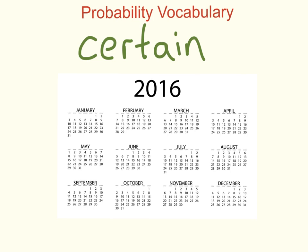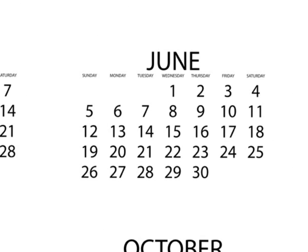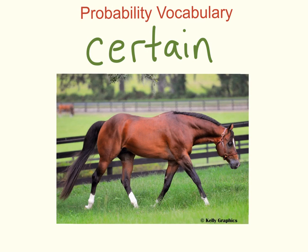July is certain to come after June. We could also say that Monday always comes before Tuesday — that is certain, it's always going to happen. Another certain event is that this horse will breathe oxygen. The horse will breathe oxygen or air — it's going to happen because horses don't breathe helium or anything like that.